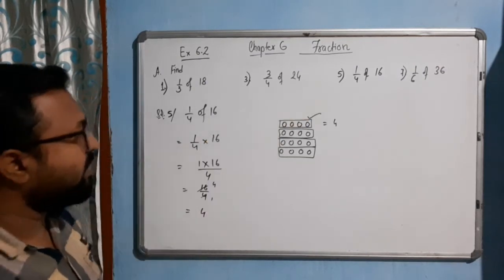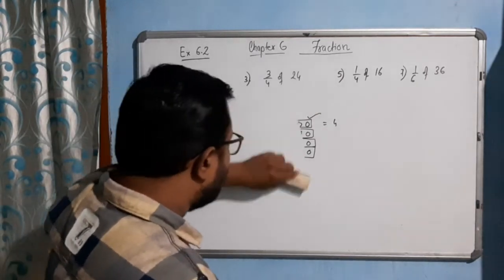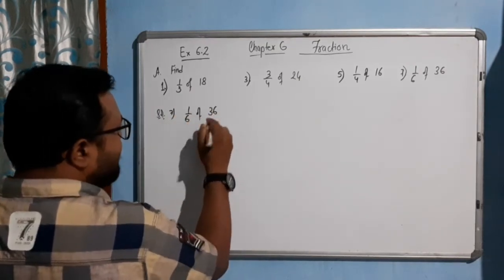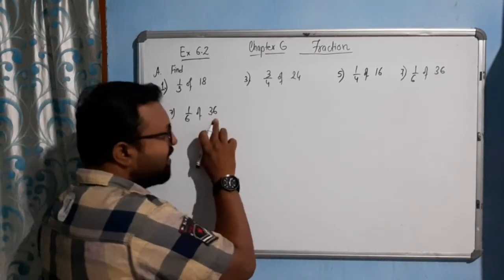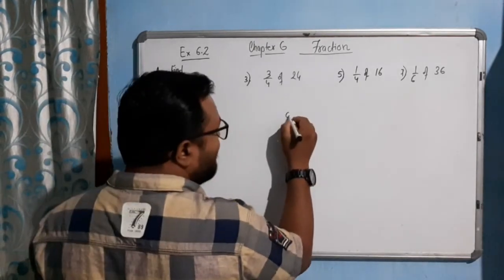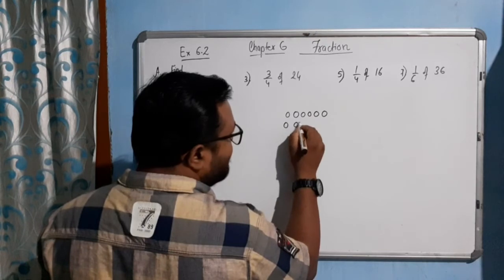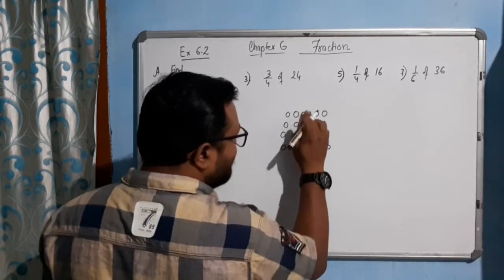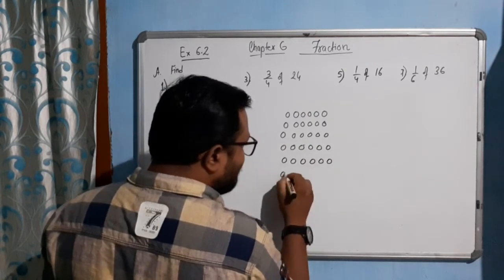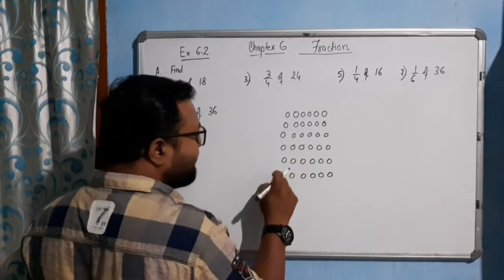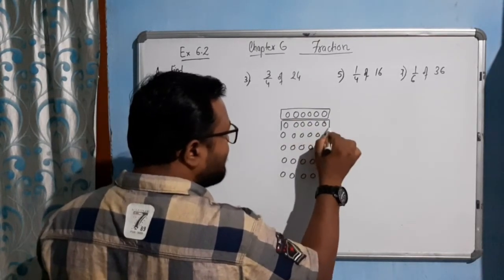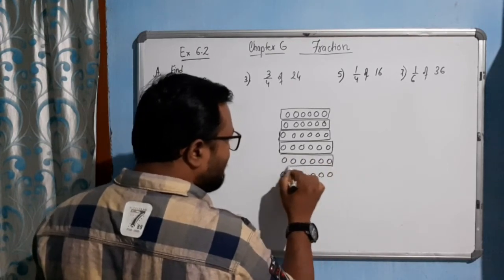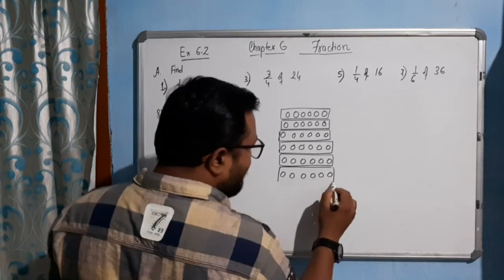Now come to the last one, question 7: 1 by 6 of 36. 36 balls to draw. If I do the calculation, 6 times 6 is 36. So this 36 is divided into 6 packets. Drawing 6 groups of 6: 1 through 6, 7 through 12, 13 through 18, 19 through 24, 25 through 30, 31 through 36. So the cumulative counts are 6, 12, 18, 24, and 36.